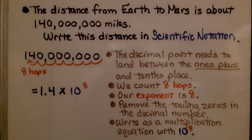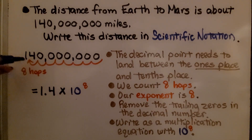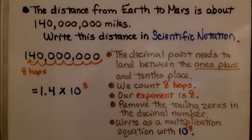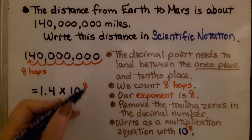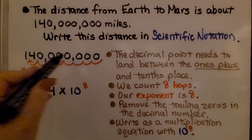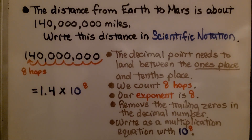The distance from Earth to Mars is about 140 million miles. Write this distance in scientific notation. The decimal point needs to land between the ones place and the tenths place. We count the hops — there are 8 — so our exponent is going to be 8. We remove all the trailing zeros in the decimal number and write it as a multiplication equation with 10 to the eighth power. We have 1.4 times 10 to the eighth power.